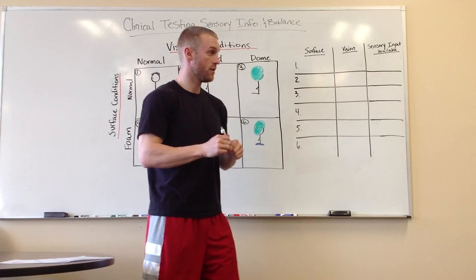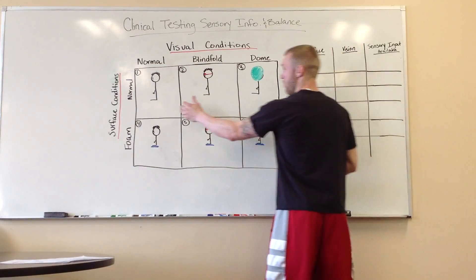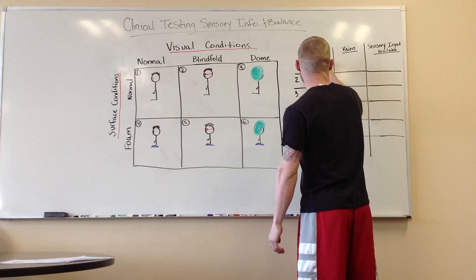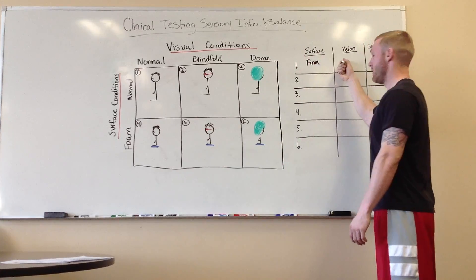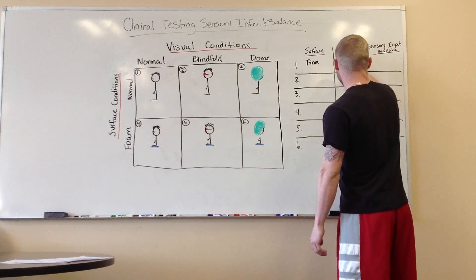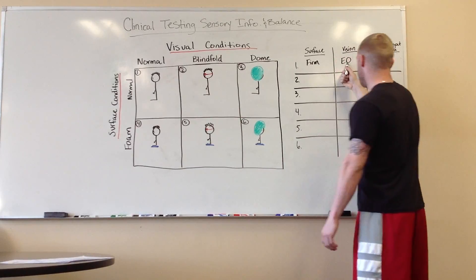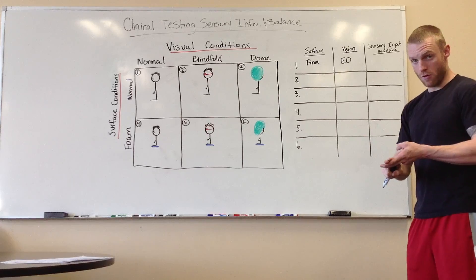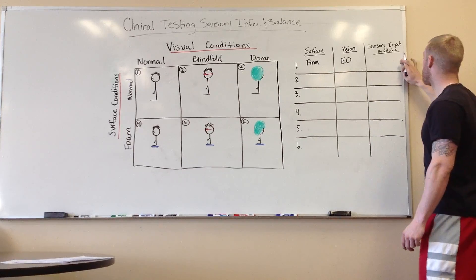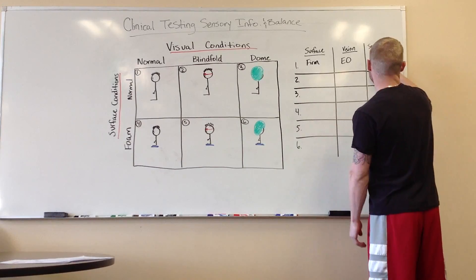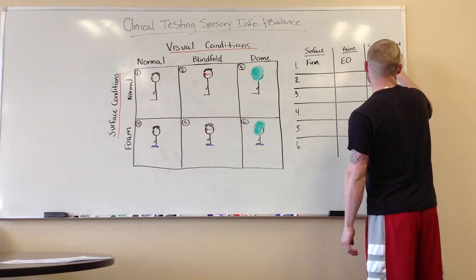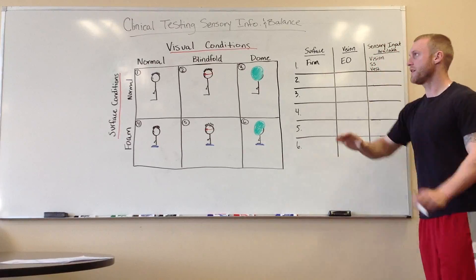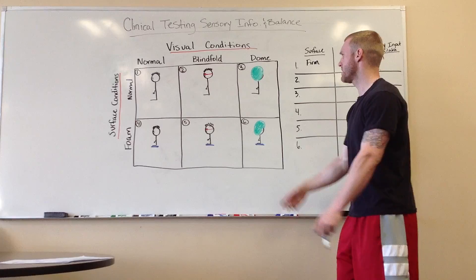So first we're just going to come over here. So first one, our surface is going to be firm. Vision, our eyes are open, and I'm just going to do eyes open. So if we have a firm surface, eyes open, then the sensory input that we should have should pretty much be all three of them. So we will say vision, somatosensory, and vestibular.